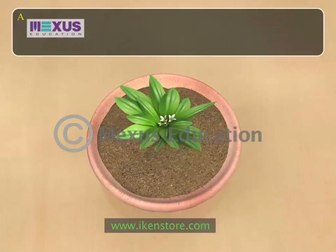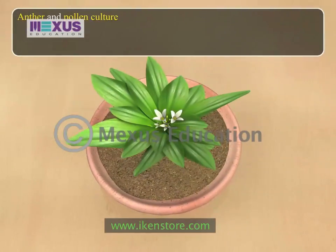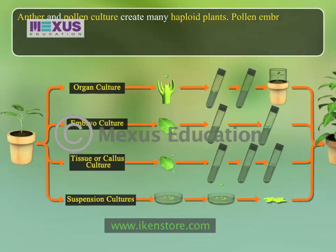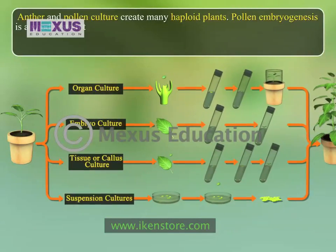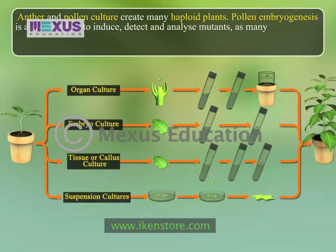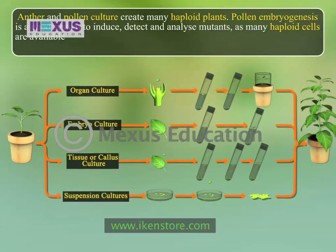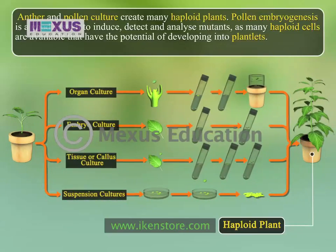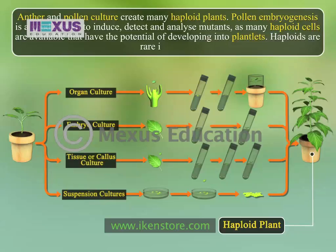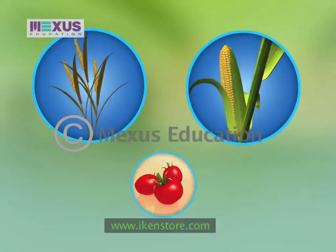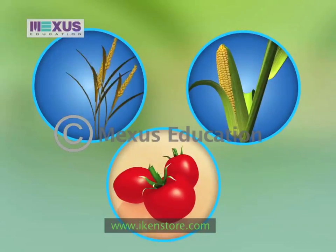Anther and pollen culture create many haploid plants. Pollen embryogenesis is a good system to induce, detect, and analyze mutants, as many haploid cells are available that have the potential of developing into plantlets. Haploids are rare in nature. Over 250 plant species like barley, maize, and tomato have been successfully developed by this method.